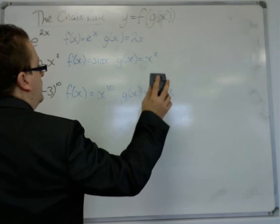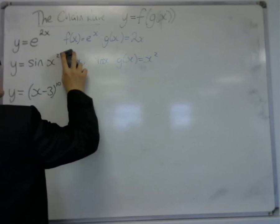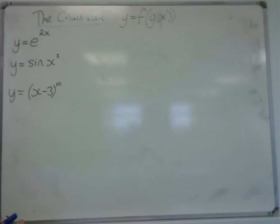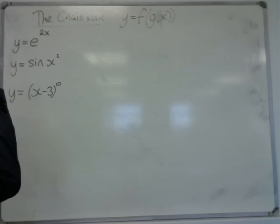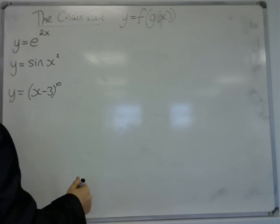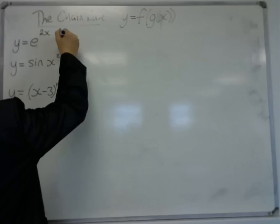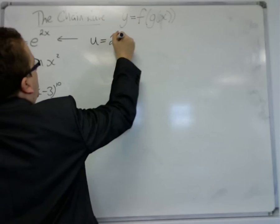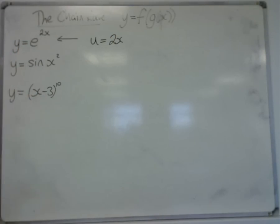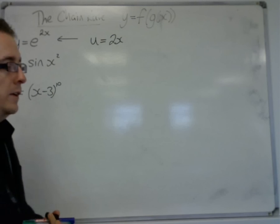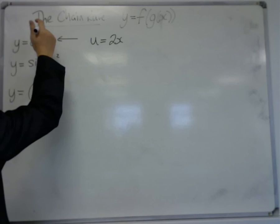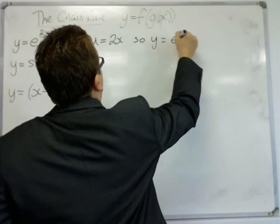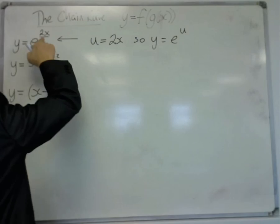Now, let's see how it works. So you start off by thinking about, if we use this as an example, we're going to let u be the 2x, effectively the g(x) here, the function that is within the other function. So y is now e to the u, because we replace the 2x with u.